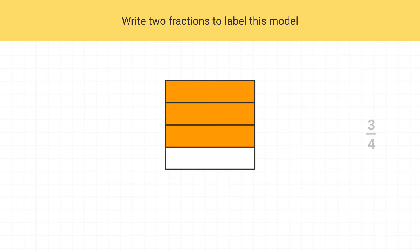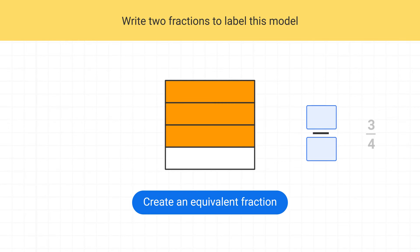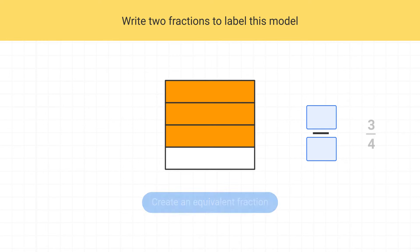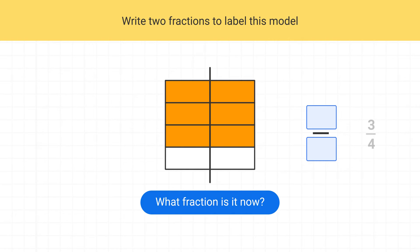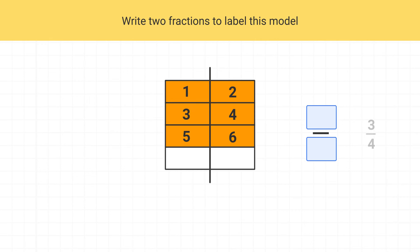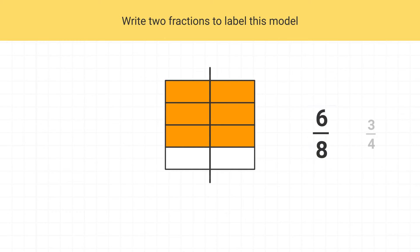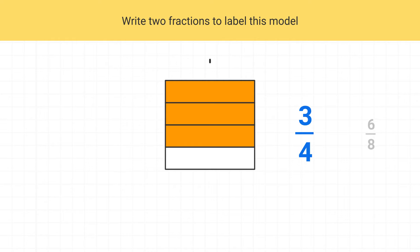Now to make another fraction, we need to create an equivalent fraction. To create an equivalent fraction, I draw a line and split each piece of the model into smaller pieces, just like this. Now I'll do this for all of the parts of this model. The fraction's equivalent because we haven't changed the amount that's shaded — we've just changed the way it looks. The model now has six shaded pieces, and there's a total of eight pieces in the whole model, so this is six-eighths. So two ways to label this model are three-fourths or six-eighths.